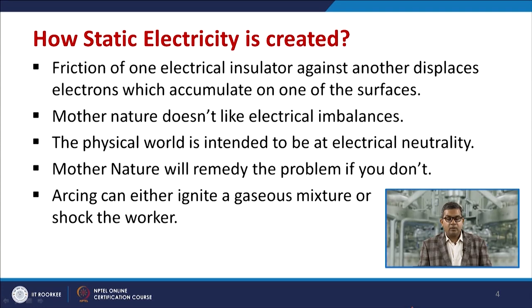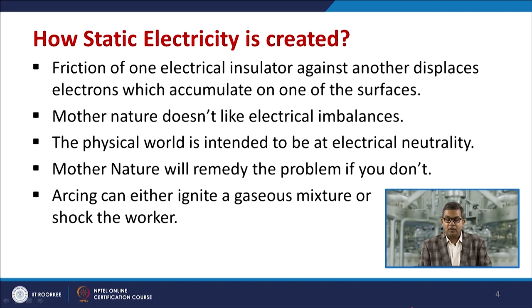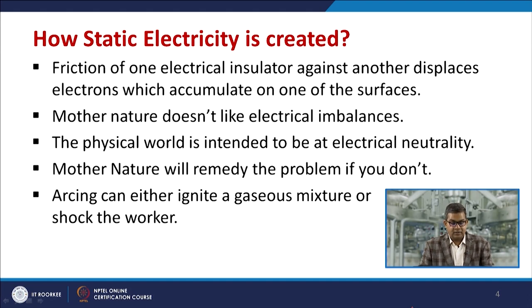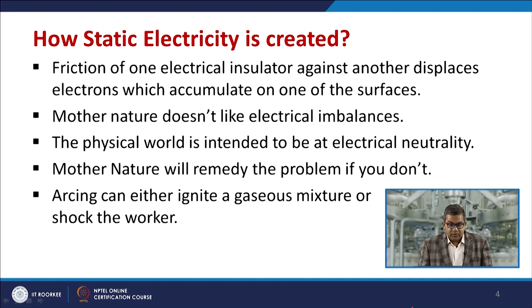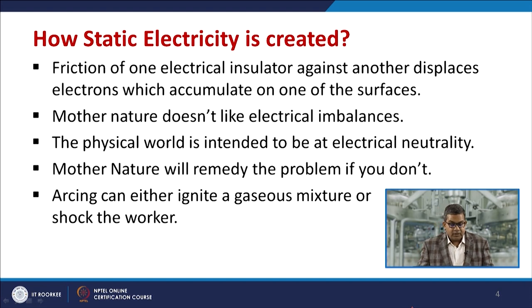How is static electricity created? Friction is one of the foremost sources. Friction of one electrical insulator against another displaces electrons which accumulate on one of the surfaces. Mother Nature does not like electrical imbalance — the physical world tends toward electrical neutrality. Arcing can either ignite a gaseous mixture or shock a worker, so Mother Nature will attempt to neutralize any charge imbalance within the system.